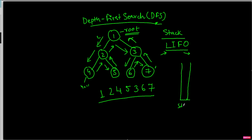So let's walk through this example. We have this stack, and we'll start the DFS from the root. First we'll add one to the stack. Then we pop the element — one is the only element — so one is popped out. Now we'll add the children of one to the stack, so we'll add three and then we'll add two.